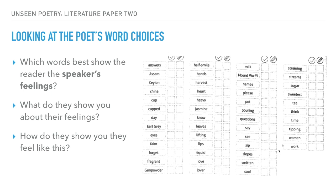These word choices show a sense of romantic involvement between the speaker and the person they're talking to. The tea the speaker is making for this person becomes a reflection of their relationship — how well they know them is reflected in how well they know how this person drinks their tea. Think about making tea for someone: if you know them really well you don't even need to ask — milk, two sugars, sweetener. Whereas if you're getting to know someone for the first time, you still need to ask those questions several times until you have it memorised. That's my interpretation of the poem.